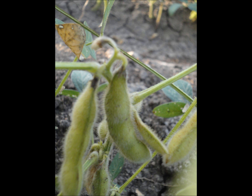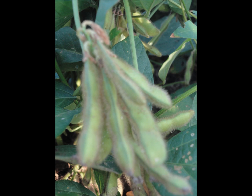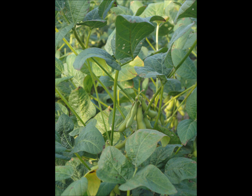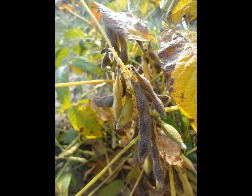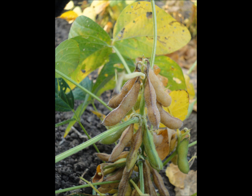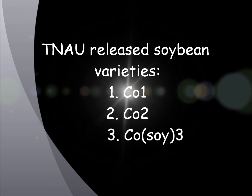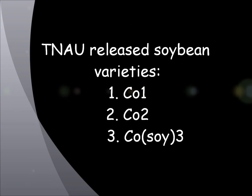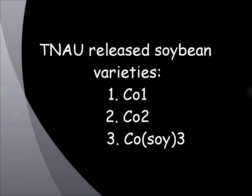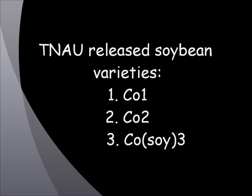The pods covered with grey and brown hairs are called pubescent, and the pods without hairs are called glabrescent. At maturity the pods will be black, yellow, and brown in colour. TNAU released soybean varieties are Co1, Co2, and CoSoya 3.